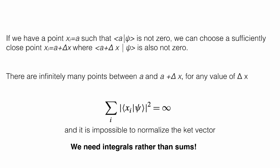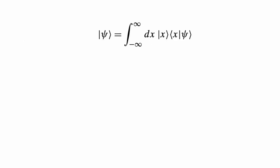That tells us if we try to write a sum, we're automatically going to get an infinity. It's impossible to normalize that ket vector psi. When we want to move from sums involving continuous bases, we have to move to integrals rather than sums. We replace the sum by an integral, and that solves everything.